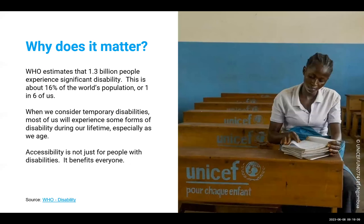Why is that important? Why does that matter? WHO estimates that about 1.3 billion people experience significant disability — about 16% of the world's population, or one in six of us. And when we consider temporary disabilities, most of us will experience some form of disability during our lifetime, especially as we age — maybe one day you break your leg, get an eye infection, or develop arthritis as you get older.